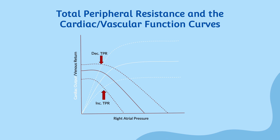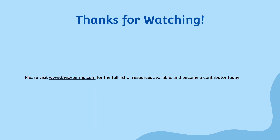Keep this in mind as you learn how various physiologic or pathophysiologic states affect the cardiovascular system. In summary, the cardiac function curve is a useful tool for understanding how changes in inotropy, venous return, and total peripheral resistance can affect cardiac output and venous return. A shift of the curve to the left or upward represents an improvement in cardiac function, while a shift to the right or downward represents a decrease in cardiac function.